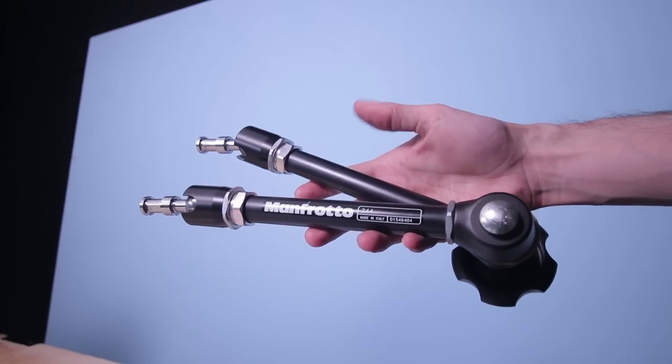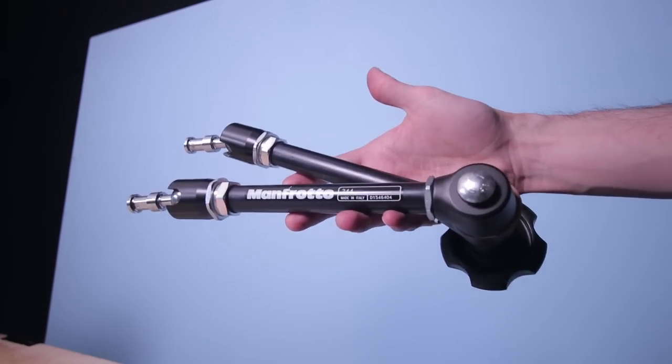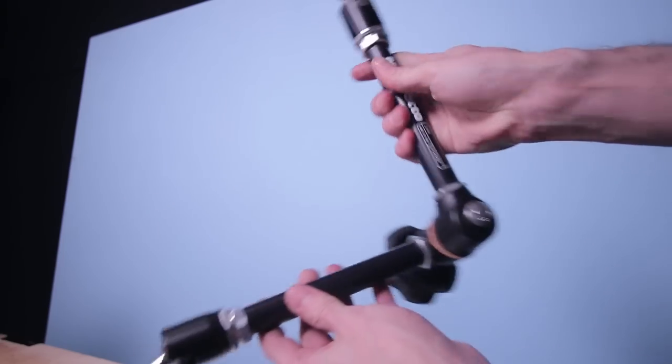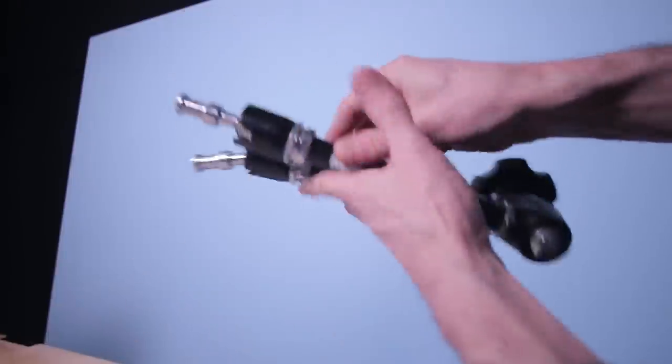It's called Magic Arm and it's quite a magic device. In fact it's great, I use it all the time. To set up a camera, hold a light or part of your set.